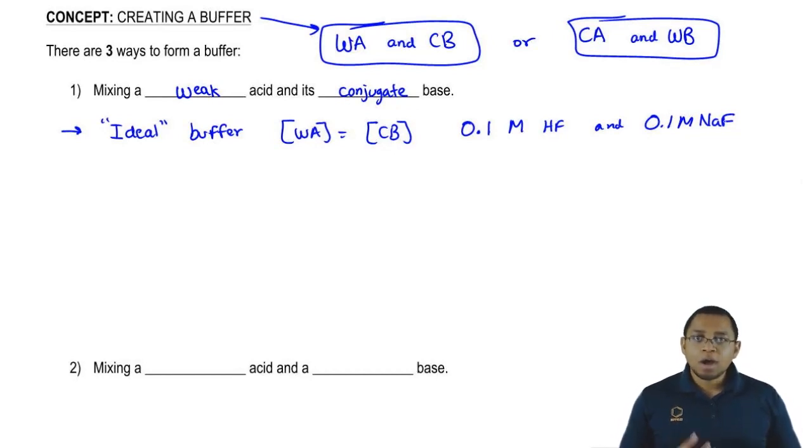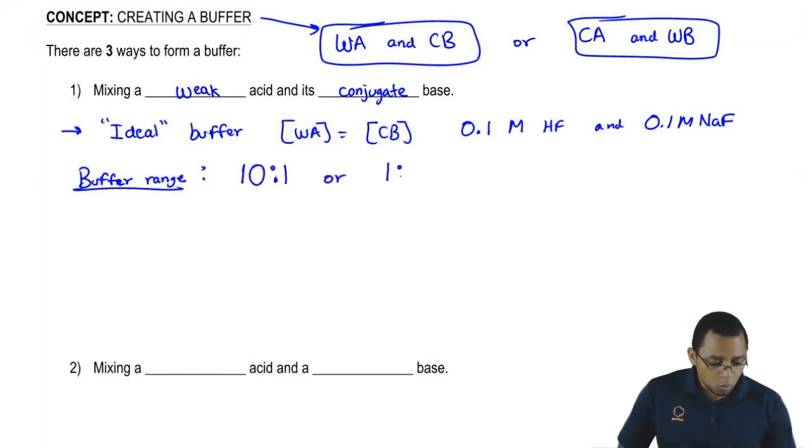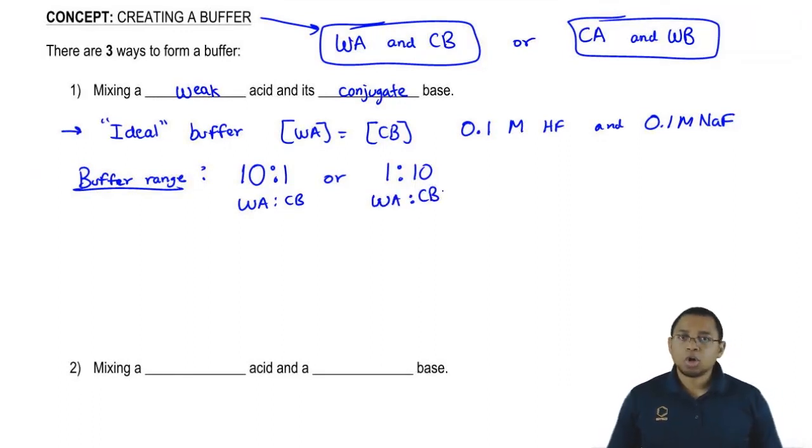This has to do with our buffer range. What you should realize here, a good buffer has to fall within the range of 10 to 1 or 1 to 10. What do I mean by that? I mean this. So 10 to 1...